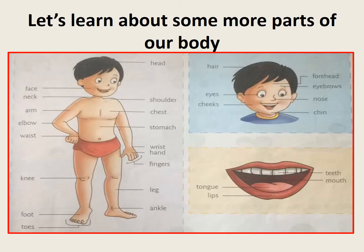Now let's learn about some more parts of our body looking at these pictures. The first picture shows different parts of our body. Starting from the top, we see head, face, neck, shoulder, chest, stomach, arm, elbow, wrist, hand, and fingers.